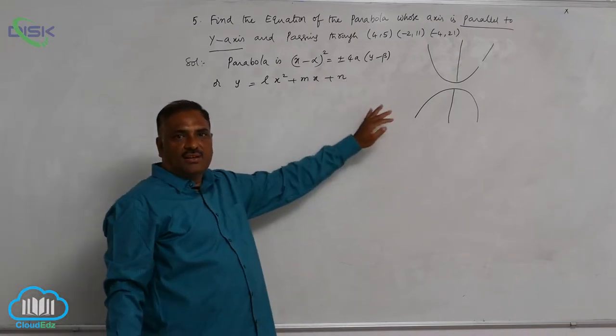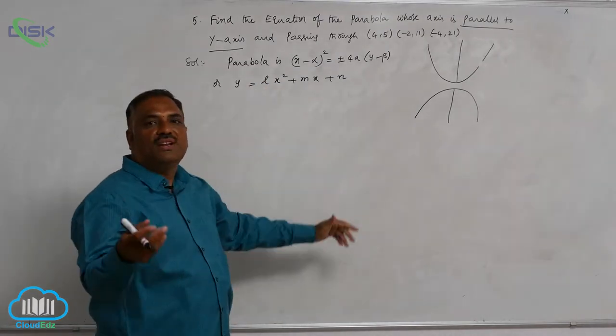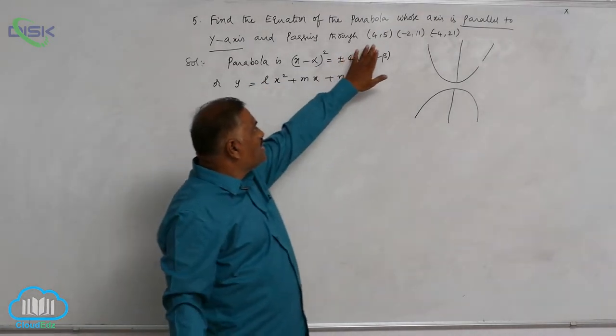Now there are three constants. To find out these three constants, we require three conditions. That is why three points are given to you.